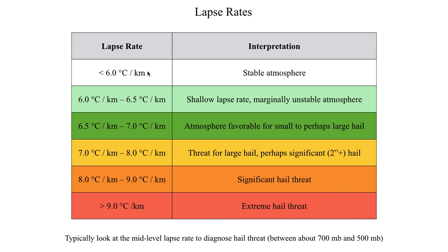A lot of times, we don't use just any regular lapse rate to diagnose hail threats or potential for significant updrafts. Usually, you'll look at the lapse rate from about 700 millibars to about 500 millibars — that value is going to be very telling as to what sort of hail sizes you can expect from any supercells in such an environment. That's going to do it for this last segment on Lecture 21. In the next segment, we'll talk about thunderstorm types and how to diagnose thunderstorm behavior using hodographs. I'll see you all in the next lecture.